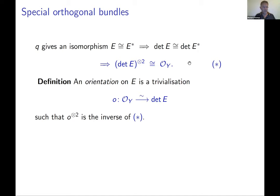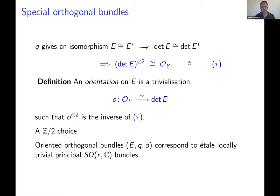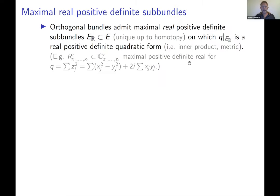The passage from O(r,ℂ) to SO(r,ℂ): oriented orthogonal bundles — a bundle with a quadratic form and an orientation in this sense — correspond étale-locally to principal SO(r,ℂ) bundles. Now, this uses the real numbers just for motivation.